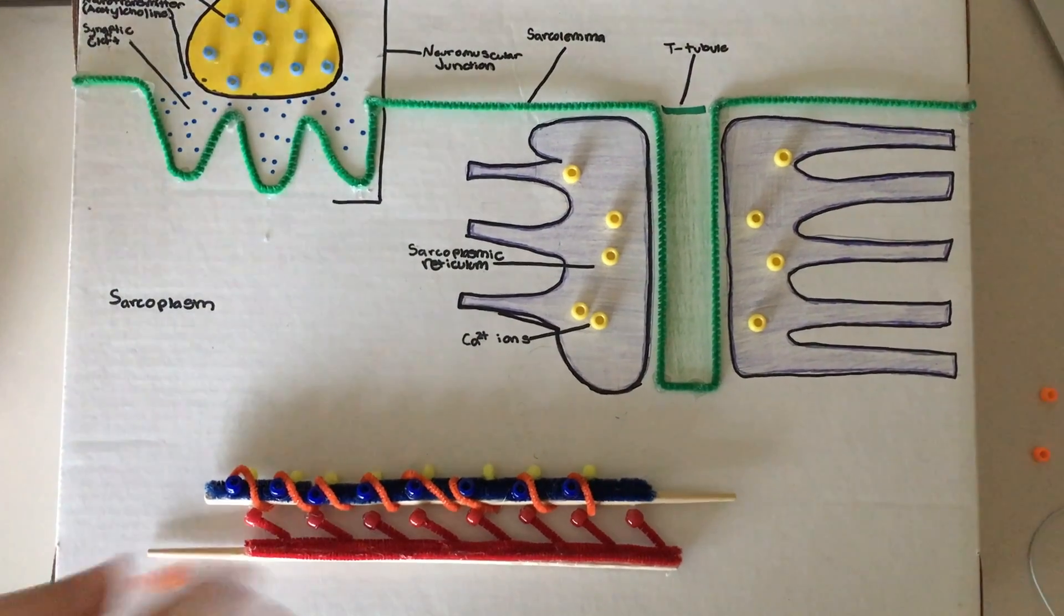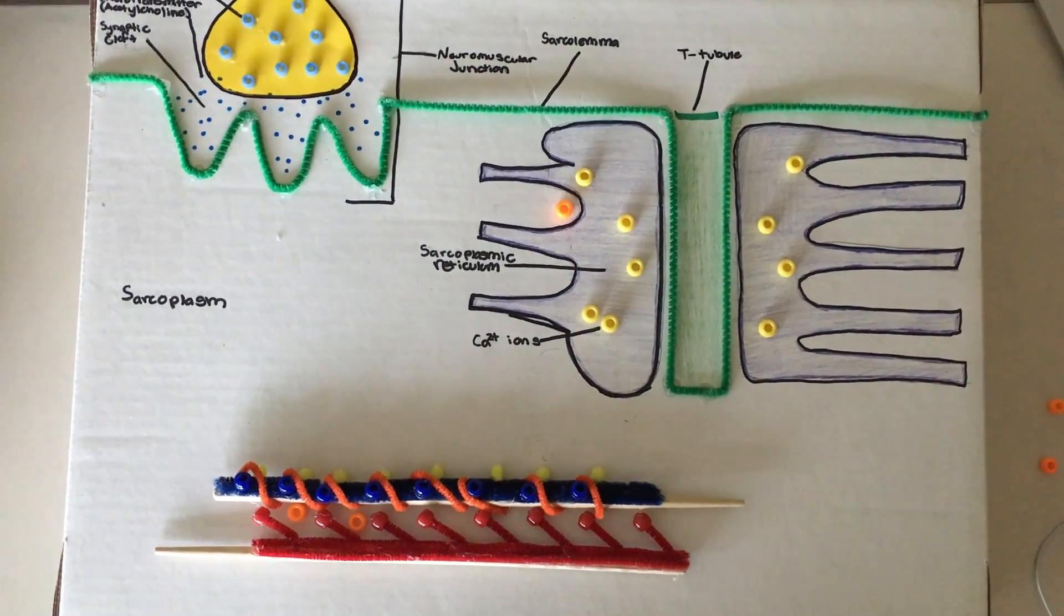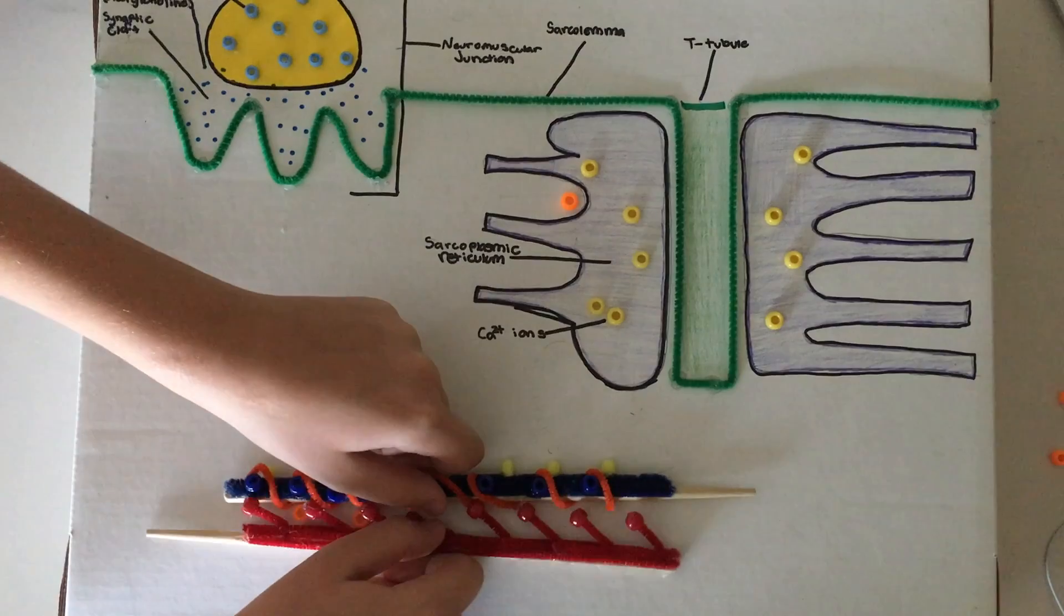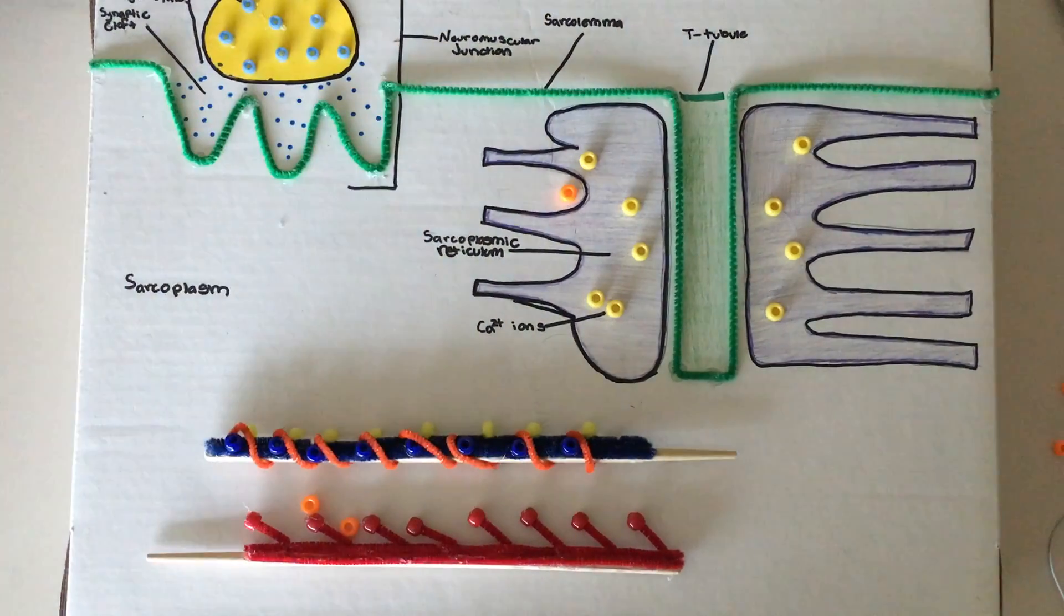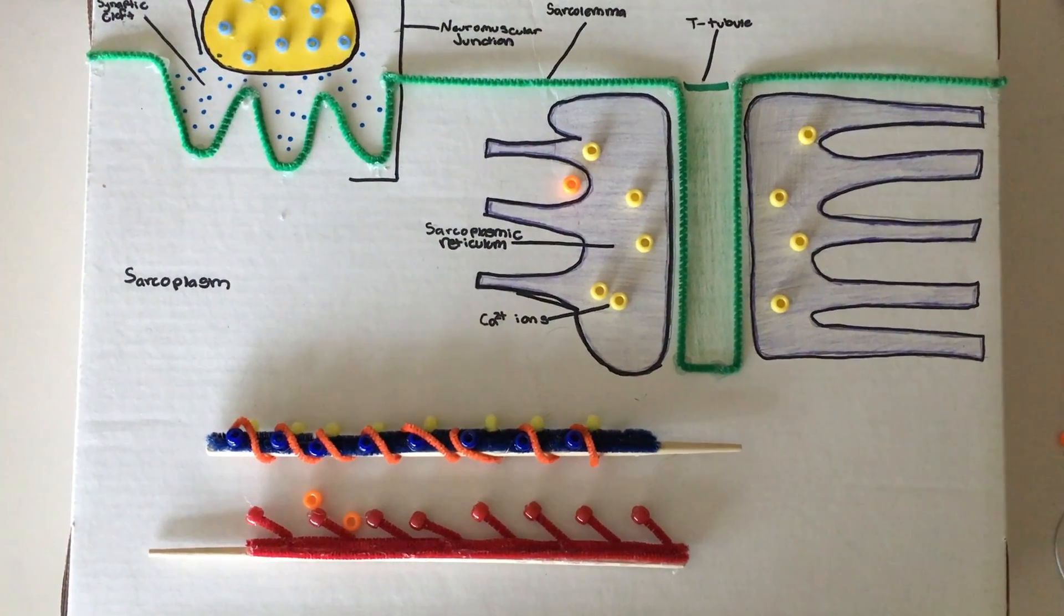The ATP is then reintroduced to the binding site and breaks the crossbridge between myosin and actin. The leftover ADP and phosphate are then recycled and the process repeats.